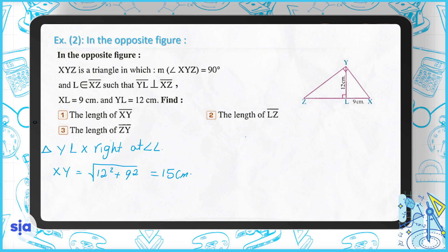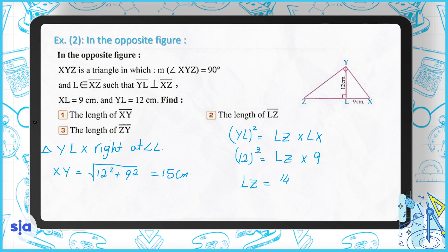For question two: by the Euclidean theorem, YL² = LZ × LX. So 12² = LZ × 9, which gives 144 = LZ × 9. Therefore LZ = 144 ÷ 9 = 16 centimeters. So LZ is 16 cm and XY is 15 cm.